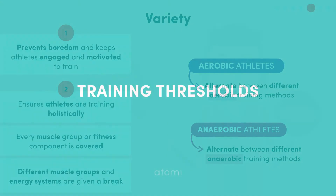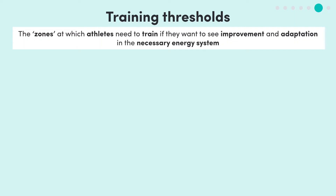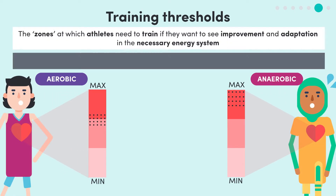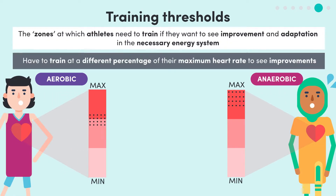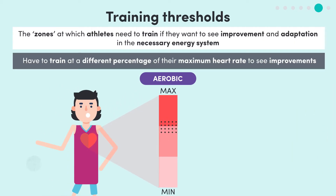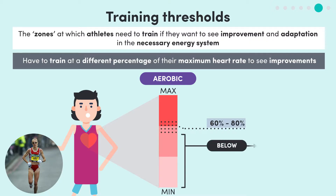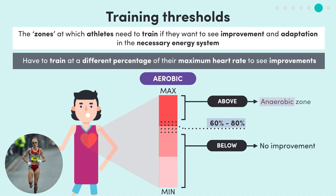Now let's dive into training thresholds. These are simply the zones at which athletes need to train if they want to see improvement and adaptation in the necessary energy system. Aerobic and anaerobic athletes have to train at a different percentage of their maximum heart rate to see improvements. One way to calculate your max heart rate is 220 minus your age. For aerobic athletes like marathon runners, they have to train between 60 to 80% of their maximum heart rate. If they train below this point they'll see no improvement, but above it they will be training in the anaerobic zone.